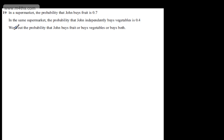This is question number 19. It says, in a supermarket, the probability that John buys fruit is 0.7. In the same supermarket, the probability that John independently buys vegetables is 0.4. We're asked to work out the probability that John buys fruit or buys vegetables or buys both.